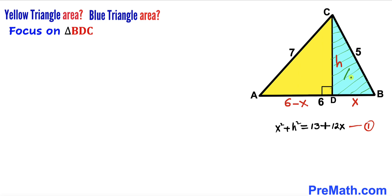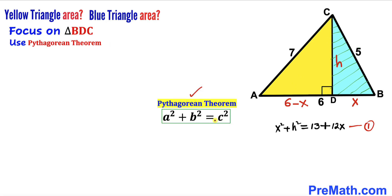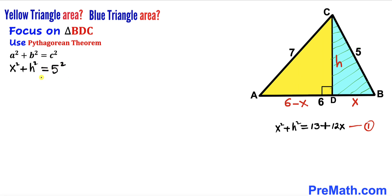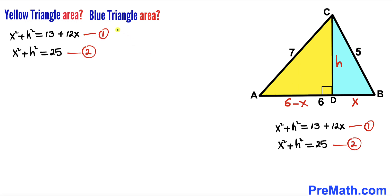Now let's focus on blue triangle BDC, whose side lengths are five, h, and x. Applying the Pythagorean theorem again with five as the hypotenuse: x² + h² = 5² = 25. This is Equation 2.